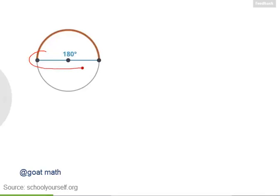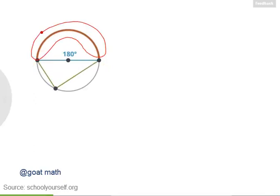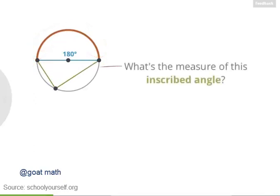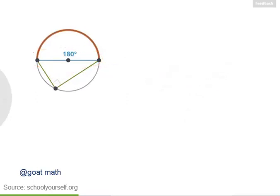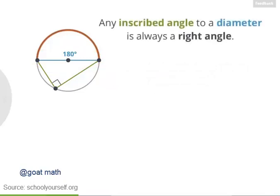Also, this straight line going through the center of the circle is the circle's diameter. So if we draw an inscribed angle to this 180 degree arc above the diameter, then this inscribed angle drawn to the circle's diameter is 90 degrees, meaning it's a right angle. And every inscribed angle drawn to a circle's diameter will always be a right angle.